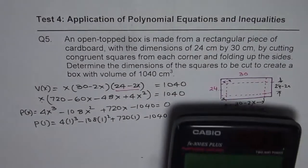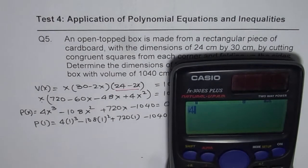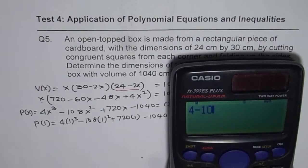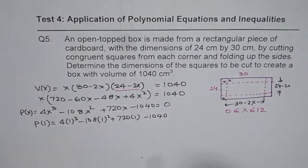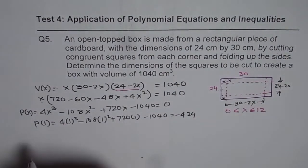So, I will have 4 times 1 cube minus 108 times 1 square plus 720 times 1 minus 1040, right? Let us see what it is. So, we can use the calculator and so we get 4 minus 108 plus 720 minus 1040 equals to minus 424. So, we get minus 424, which is not 0.